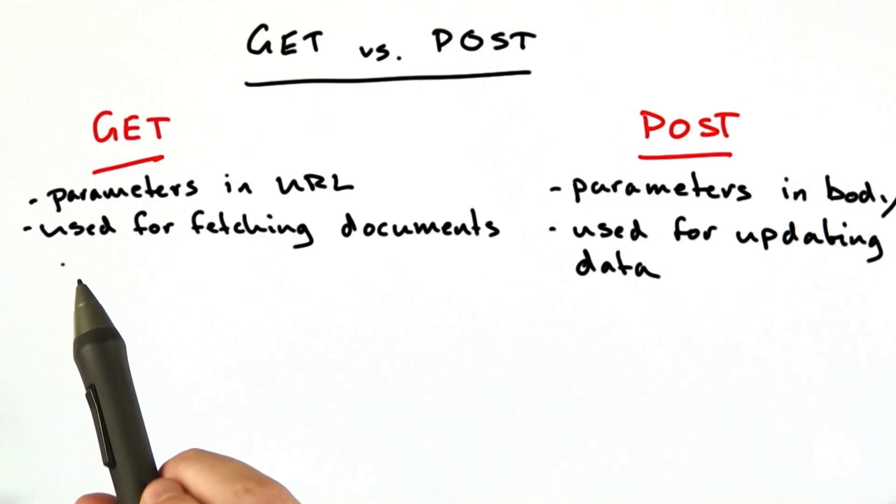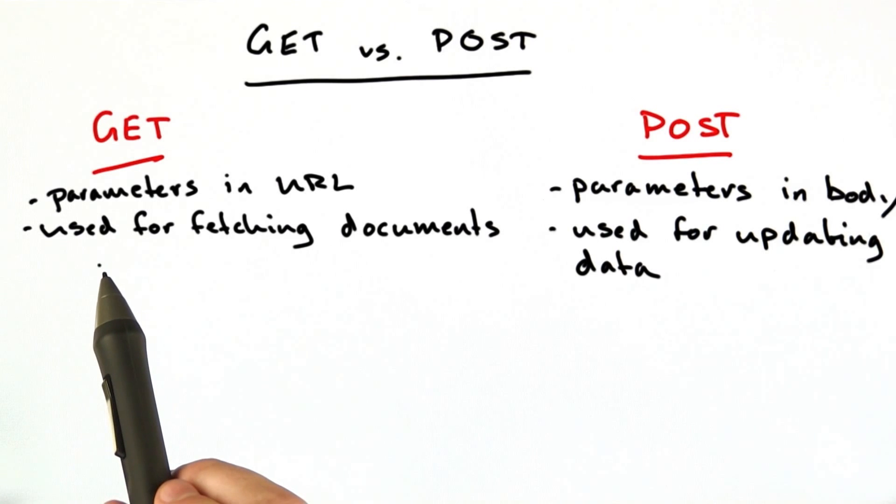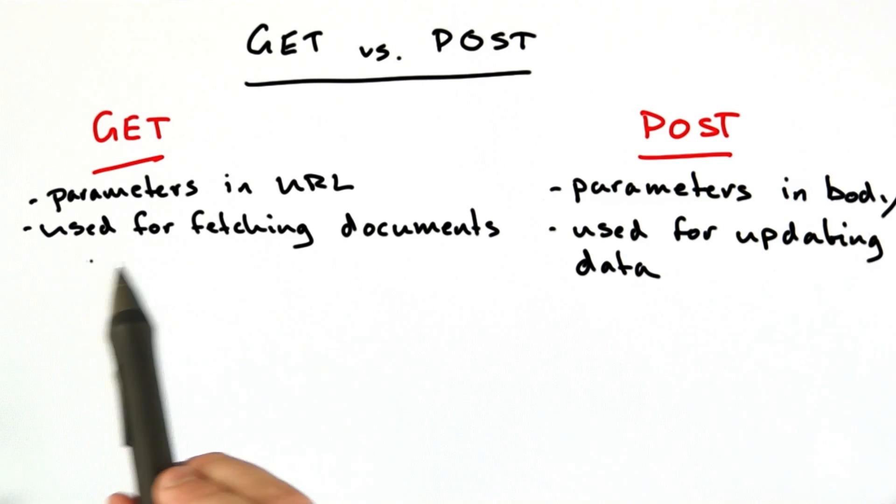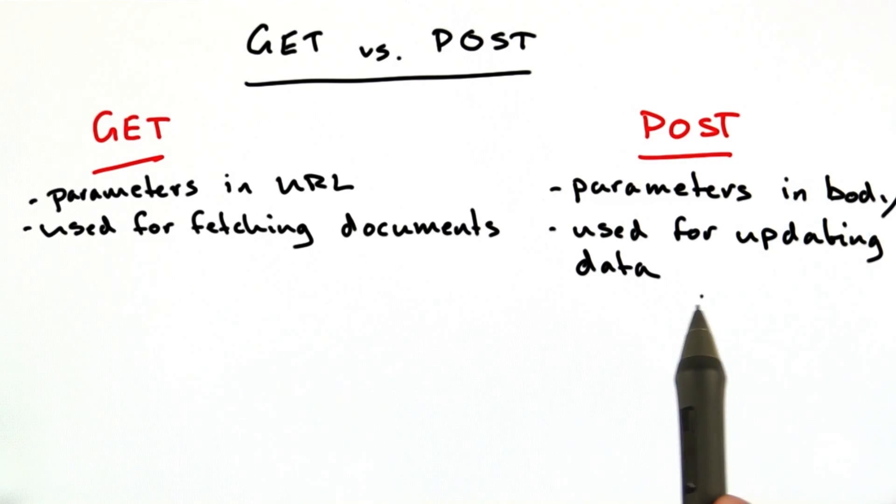Another difference is that GET requests are often used for fetching documents, and GET parameters are usually used to describe which document we're looking for or maybe what page we're on, or things of that nature. Basically, things that are describing what we're getting. Whereas POST parameters are often used for updating data, for actually making changes to the server or to the data held on the server.